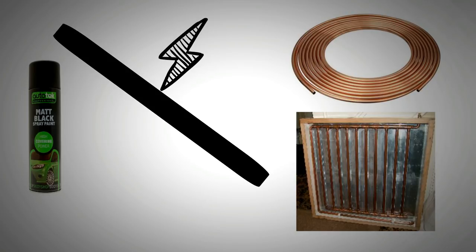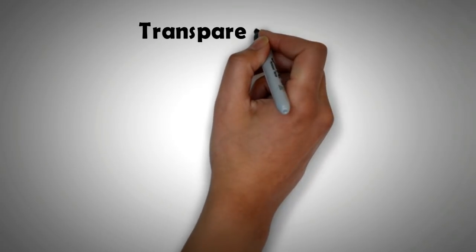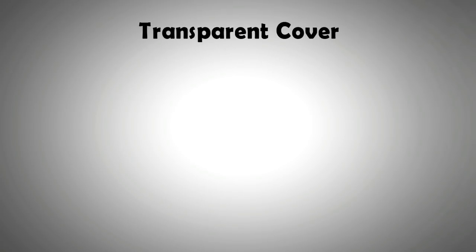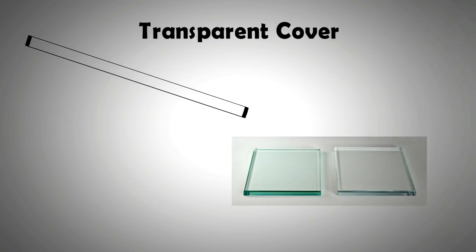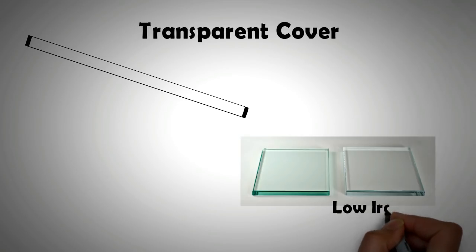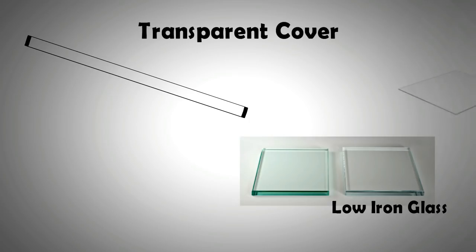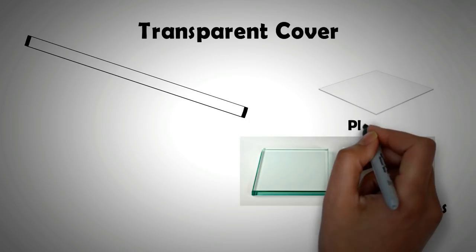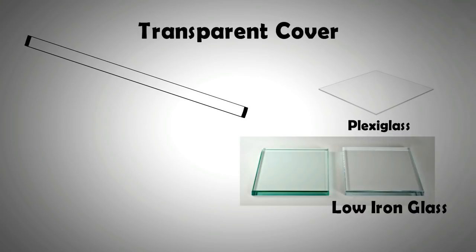The second segment of solar air heater is the transparent cover. The ideal choice for a transparent cover is the low iron glass. This type of glass allows most radiation through it and is everlasting unless broken. One can also use transparent plastic sheets or plexiglass. However, plastic cover has a tendency of getting hazy over time.